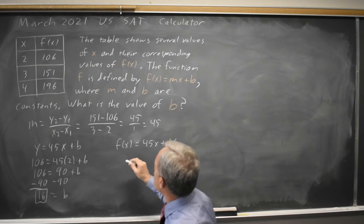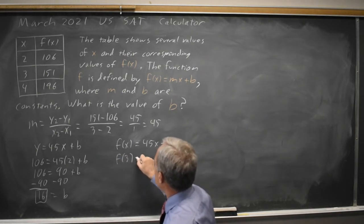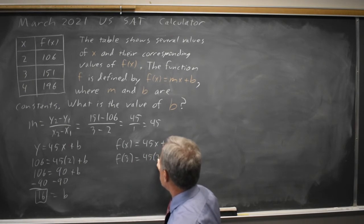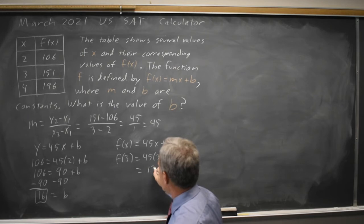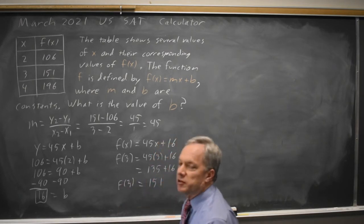Let's check it for x equals 3. And that's f(3) equals 45 times 3 plus 16. 45 times 3 is 135, and then plus 16 is 151. And that is the value on our table.